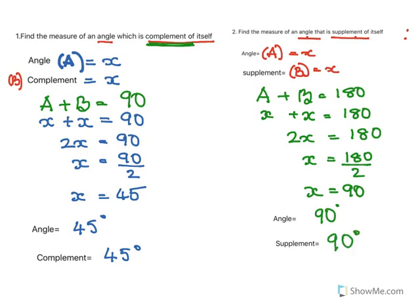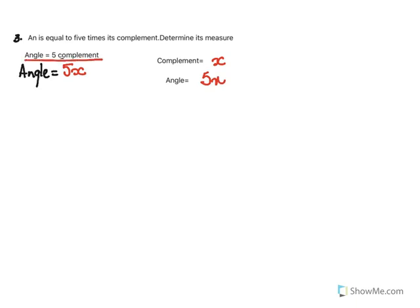An angle is equal to 5 times its complement — determine its measure. The condition is: the angle is 5 times its complement. If we take the complement as X, then the angle will be 5X, because it is given that the angle is 5 times the complement.